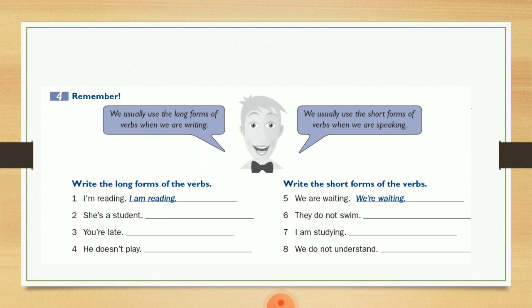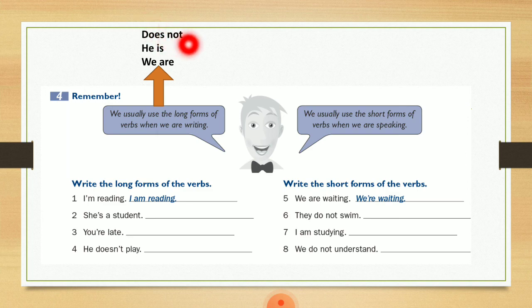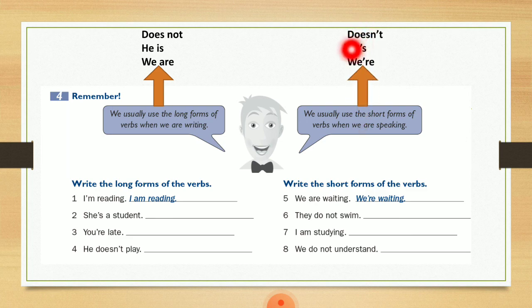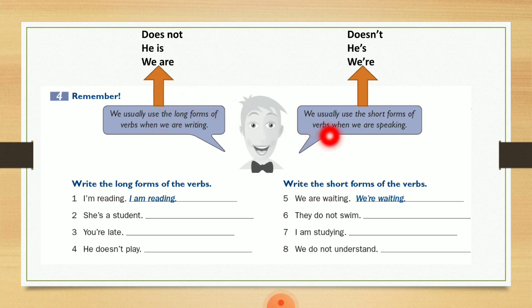Let's go to the last exercise — it is about the short forms and the long forms. We usually use the long forms of verbs when we are writing. بحكي لي هنا إنه أنا باستخدم الـ long form بحالة الكتابة. معنى long form لما أستخدم does not, he is, we are — بما إني فصلت الكلمتين عن بعض فهاي بسميها long form — صيغة طويلة. عكس الـ long form هي الـ short form، واستخدام doesn't بدل does not، he's بدل he is، we're بدل we are. We usually use the short forms when we are speaking. يعني بحالة الكتابة نستخدم الـ long form وبحالة التحدث نستخدم الـ short form. وما ننسى إنه دائما الـ short form فيها apostrophe بمكان الحرف المحدوف.